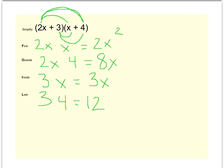So again, always ask yourself if you have any like terms to combine. I've got an 8x and a 3x to become 11x. So I have 2x squared plus 11x plus 12. And that will be my answer for multiplying binomials together.